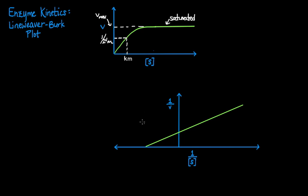The x-axis intercept is 1 over negative Km. The y-axis intercept is 1 over Vmax. The slope of this curve is Km over Vmax. These are the key takeaway points from the Lineweaver-Burk plot of an enzymatic reaction.